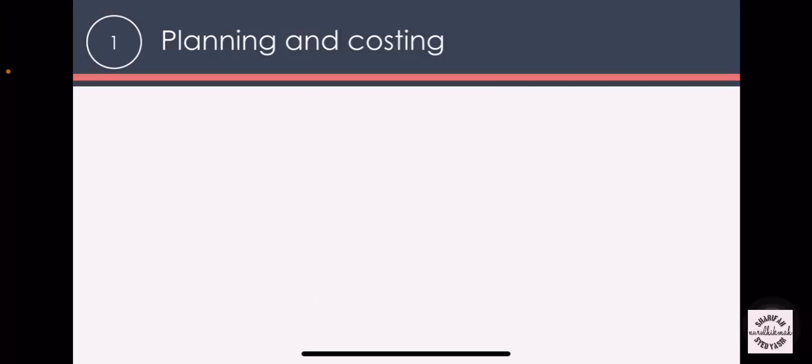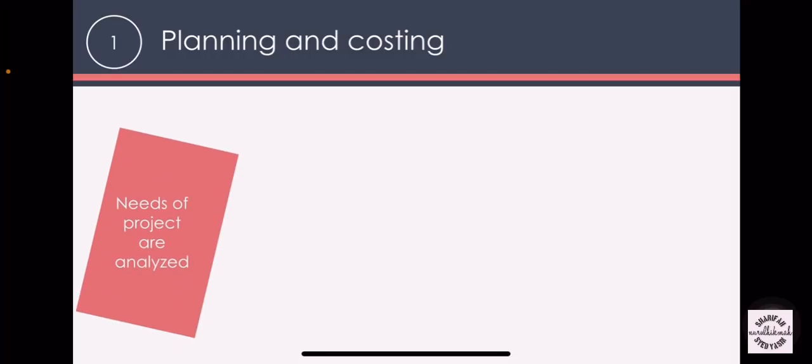Let us discuss planning and costing first. In planning and costing, the needs of a project are analyzed by outlining its messages and objectives. The messages of a multimedia project are what the main content is going to be delivered to the users, and the objectives are the goals that need to be achieved by developing the multimedia project.